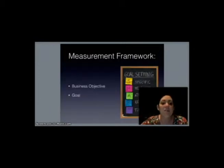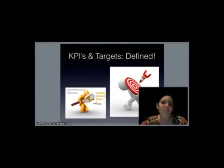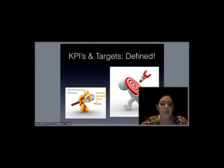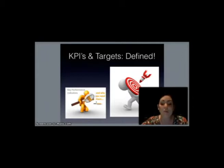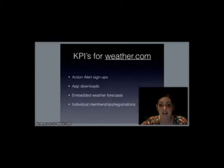Our business objective is top-of-mind awareness in regards to forecast, with the goal of increasing web signups. KPI stands for Key Performance Indicator. These indicators help you understand how you're doing against your objectives. They're a direct reflection of your objectives, which makes them unique from company to company. Targets are a predetermined numerical value created for each KPI, and they gauge your success or failure during analysis.